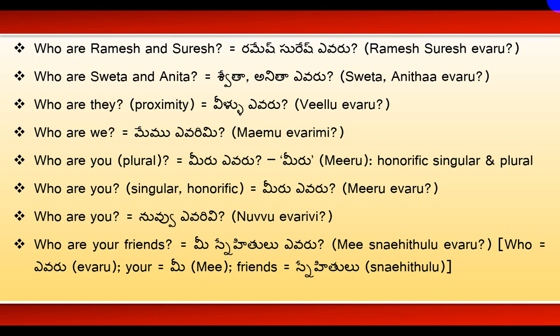Who are they? means Veellu Yavaru. The word Veellu indicates proximity, while Vallu indicates remote.